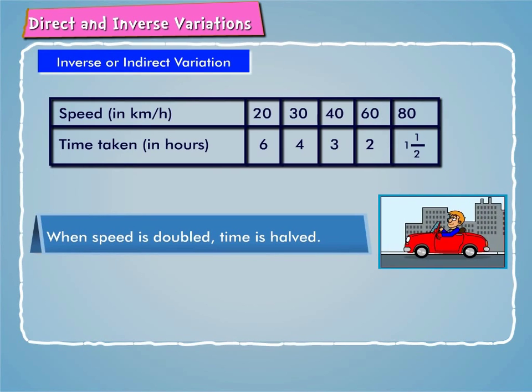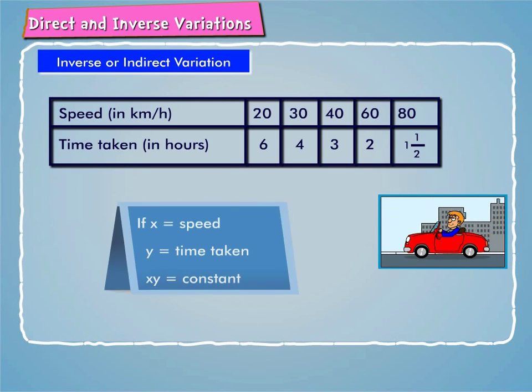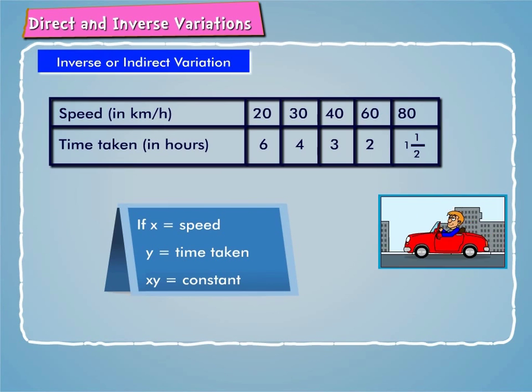When speed is doubled, time is halved. In general, if x is speed and y is time taken, then x times y is constant. This is an example of inverse or indirect variation.